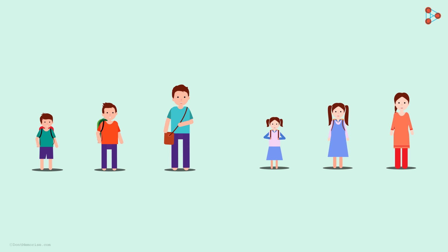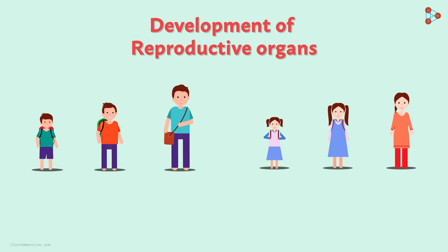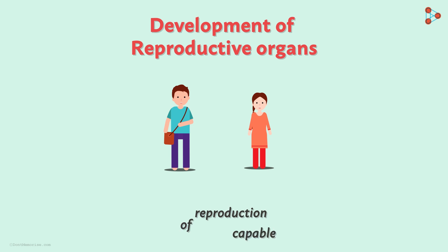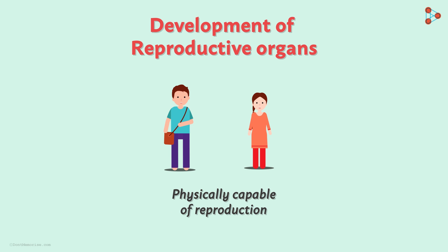By now we are aware of almost all the changes that occur during puberty in both boys and girls. The most important of all changes is the development of reproductive organs. The stage of sexual maturity is what defines puberty in the true sense — meaning that the individual is now physically capable of reproduction.